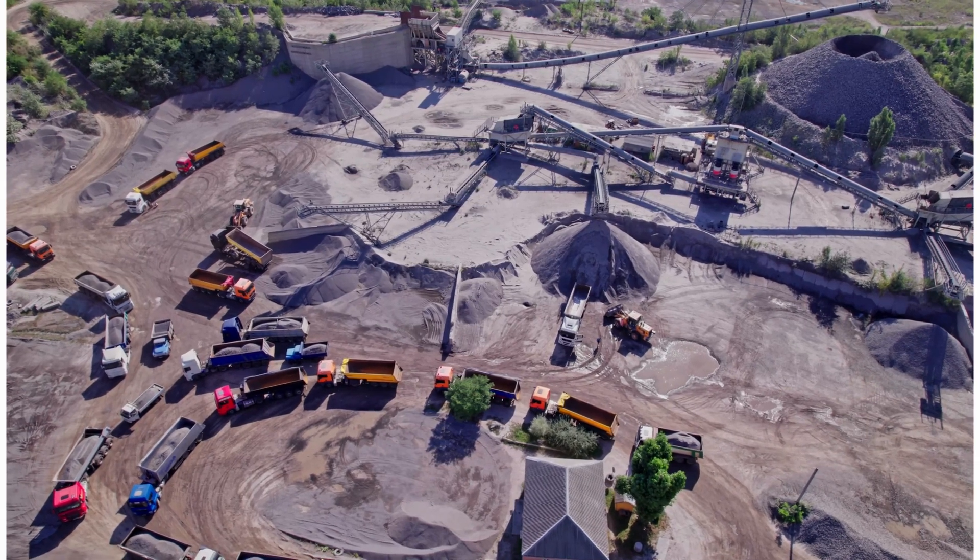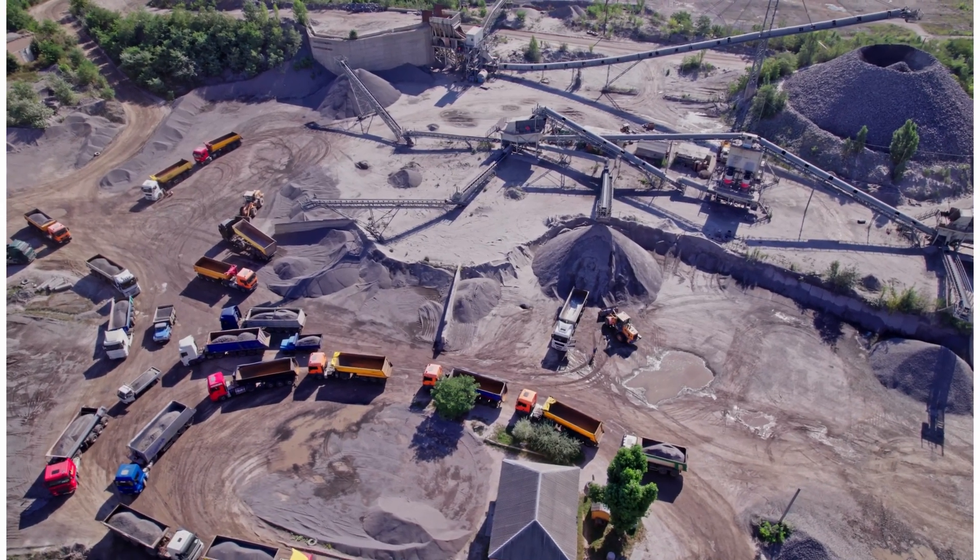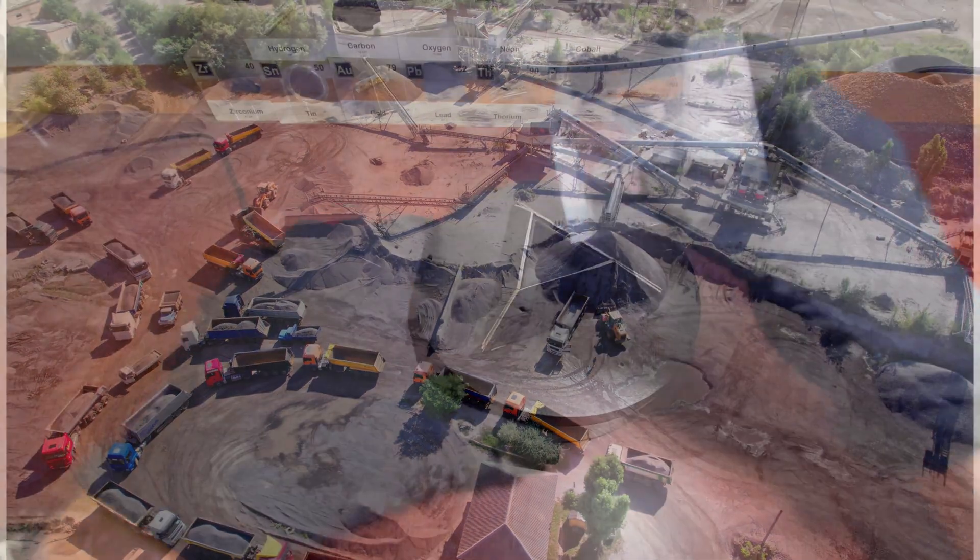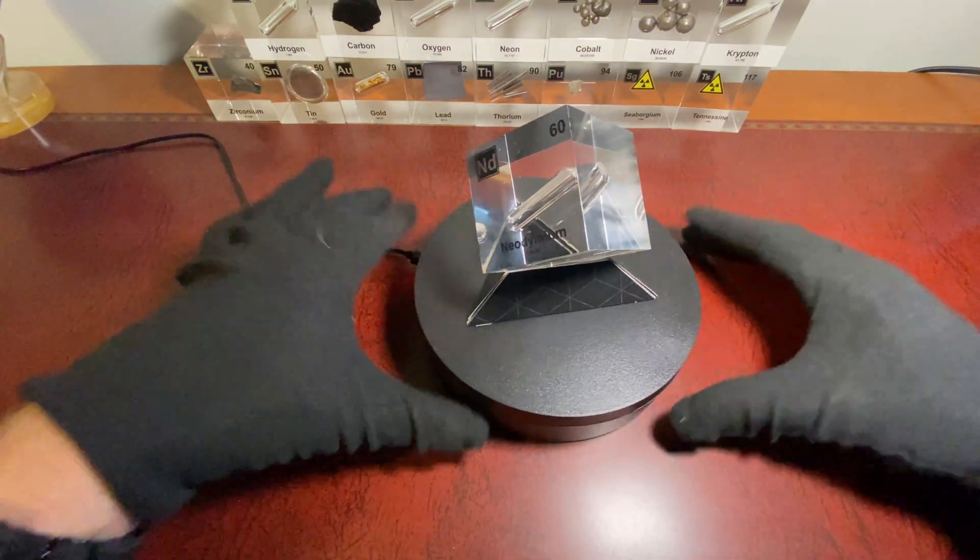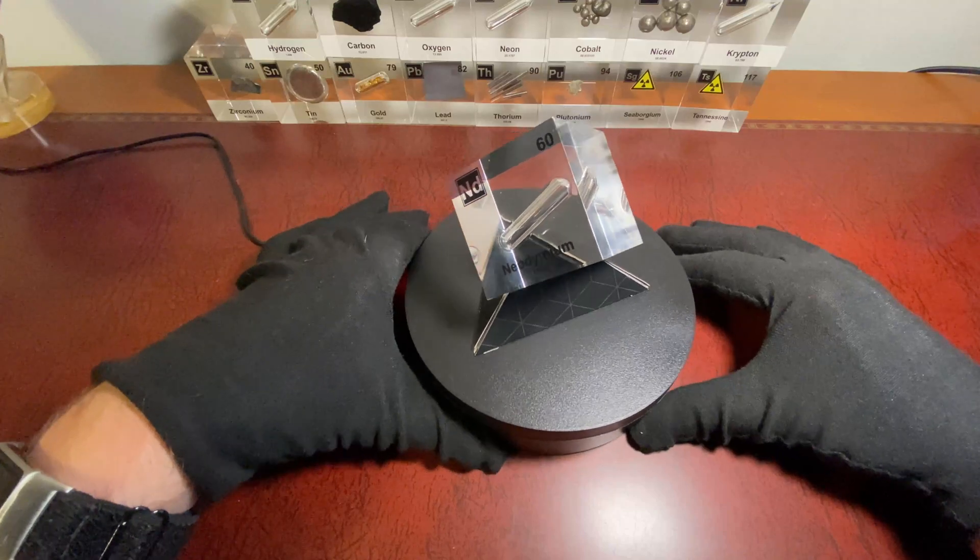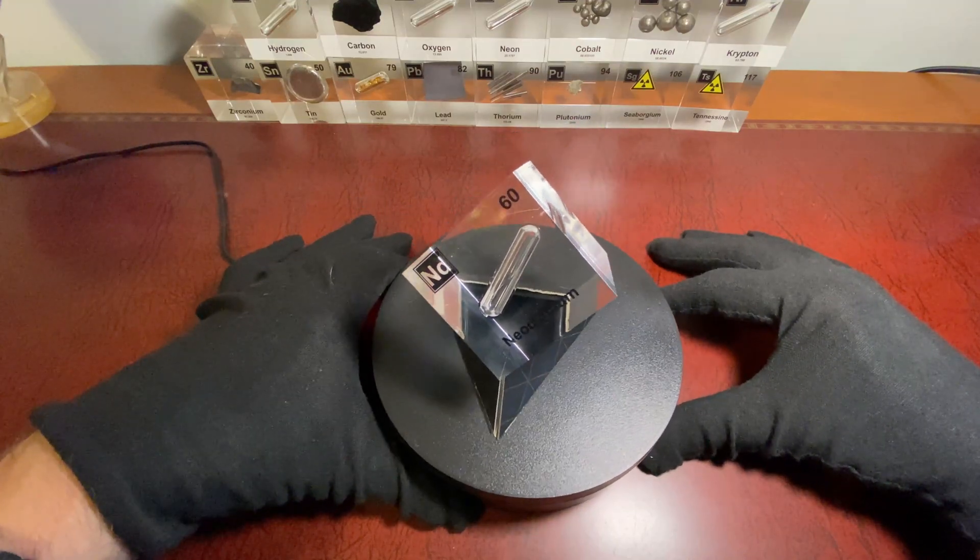Neodymium does not occur in its pure form in nature. Except for a few noble metals like gold, silver and copper, most metals are highly reactive and are therefore never found in their pure form, but rather in compounds, usually salts or oxides. For neodymium, this typically means that it's found in mixtures of phosphates, carbonates and fluorides.